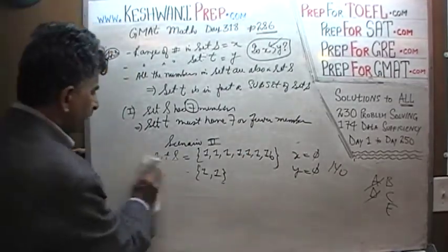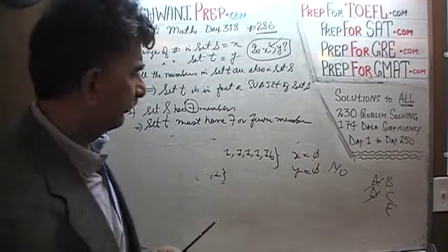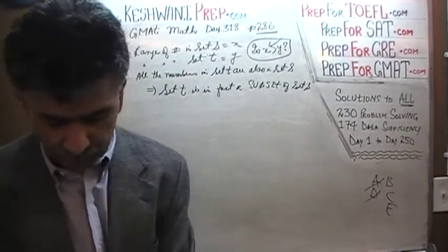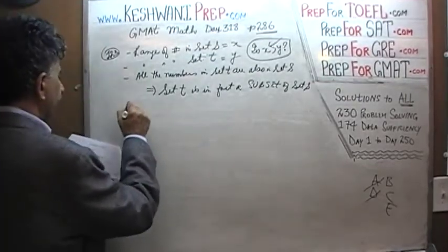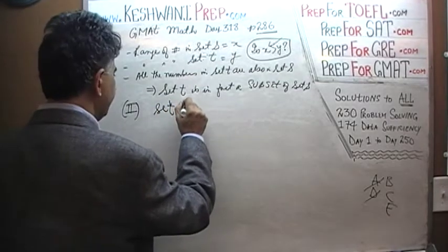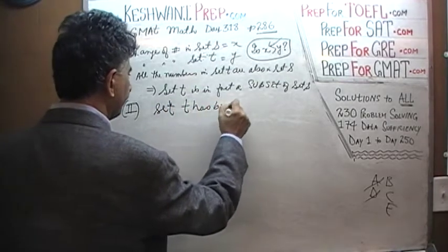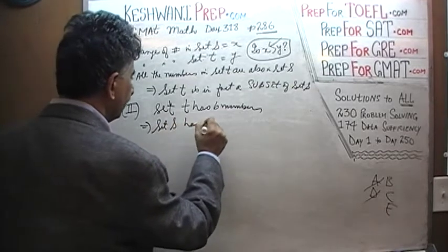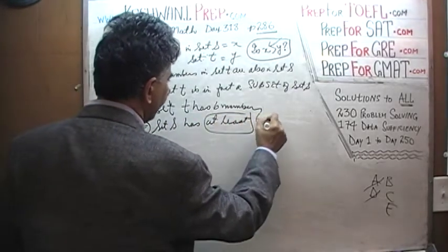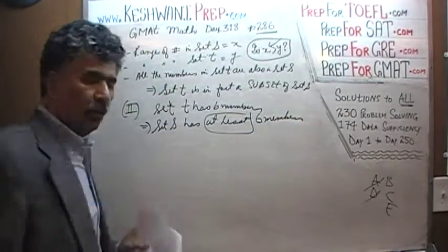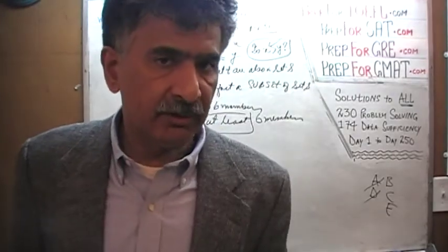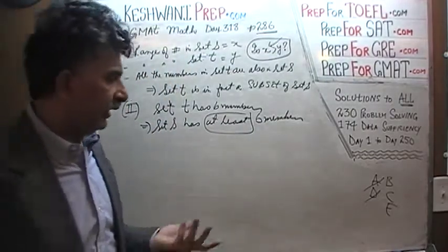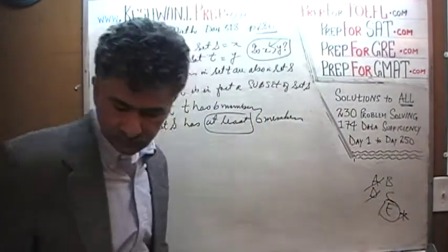Let's look at the second statement. The second statement tells us that set T has six members. If set T has six members, this implies that set S has at least six members. But again, all this tells us is the number of members in each set. It doesn't tell us anything about the range. Simply knowing the number of members in a set does not give us any information about the range. The second statement is also not sufficient. The answer is E.